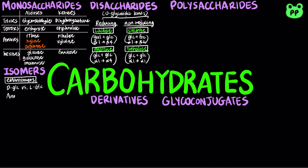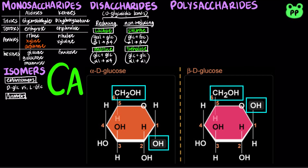A second type of isomers are anomers, which differ at the anomeric carbon in a cyclic saccharide. In the alpha-form, the anomeric carbon and carbon-6 point in opposite directions, whereas in the beta-form, the anomeric carbon and carbon-6 point in the same direction. Alpha- or beta-anomers can be distinguished by specific glycosidase and amylase.